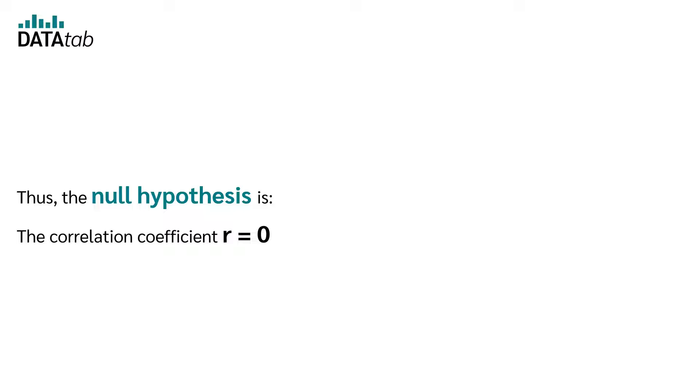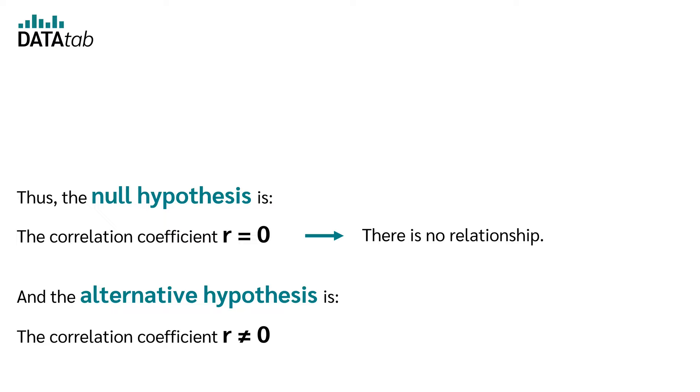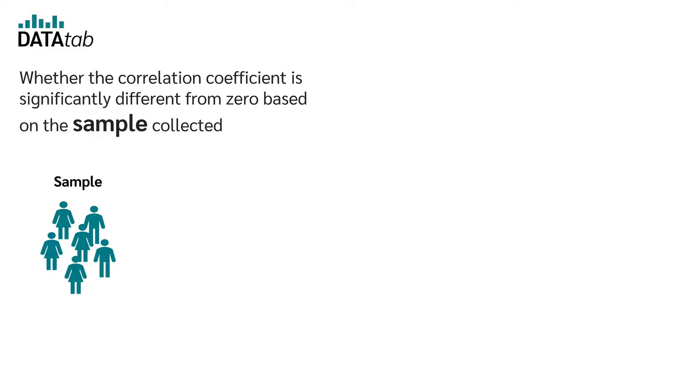Thus, the null hypothesis is the correlation coefficient r is equal to 0, there is no relationship. And the alternative hypothesis is the correlation coefficient r is unequal to 0, there is a relationship.